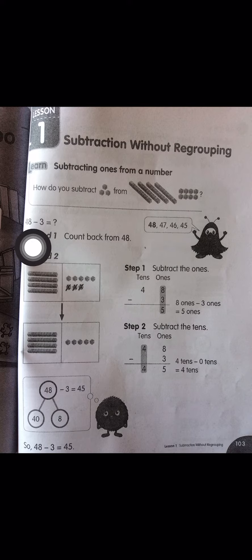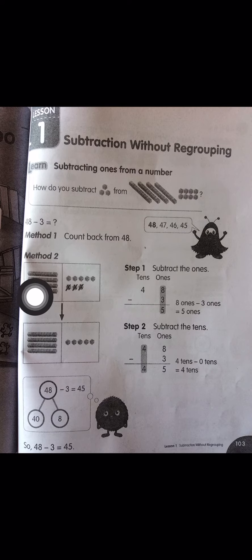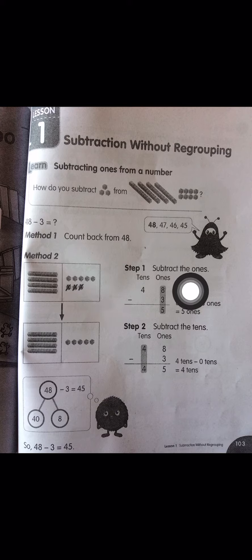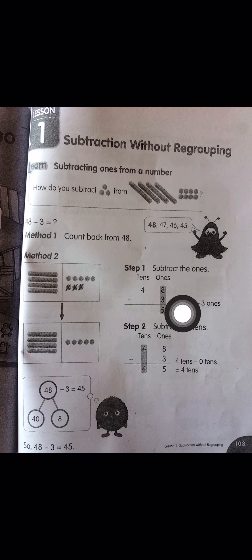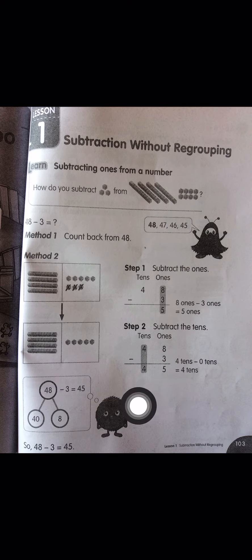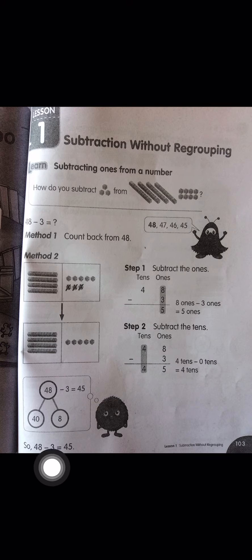Method two: step one, subtract the ones — 8 and 3. The ones number becomes 5, and the tens number 4 is 40. So first you subtract the ones, and after that you keep the tens. So you will see 48 subtract 3 equals 45.